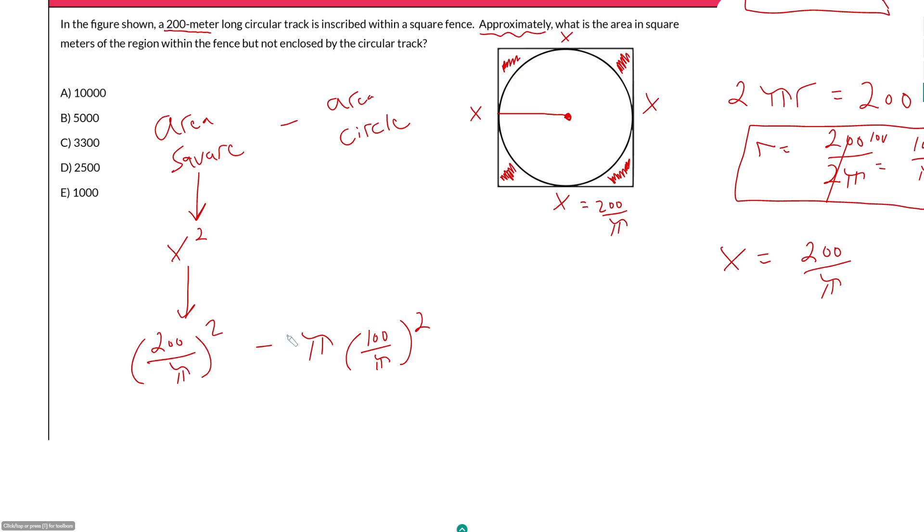So 200 over π all squared, that's going to be 200 squared over π squared. So 200 squared, that's 200 times 200, so that's just a 4 with four zeros, 40,000. So 40,000 all over π squared minus, now don't cancel out these two π's yet. First we gotta square this guy, so we have π times 100 squared over π squared. So 100 squared is going to be a 1 with four zeros. So we get π times 10,000 over π squared.